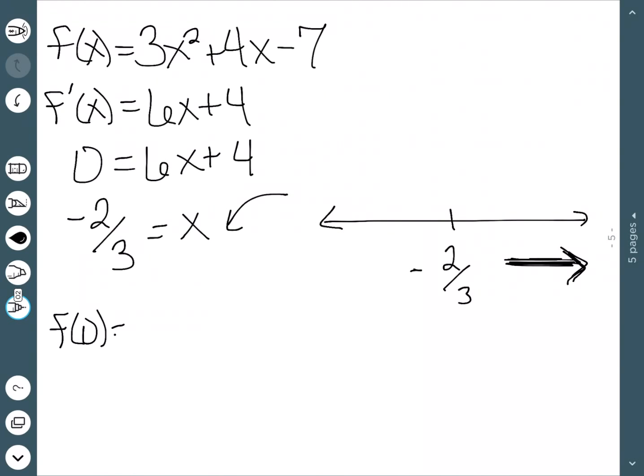Well, f of a number like zero is going to be -7. So I'm just going to write -7 on this side. If I consider numbers on this side, well, -1 is on that side. So what is f(-1)? Well, 3 - 4 - 7 would be -8.